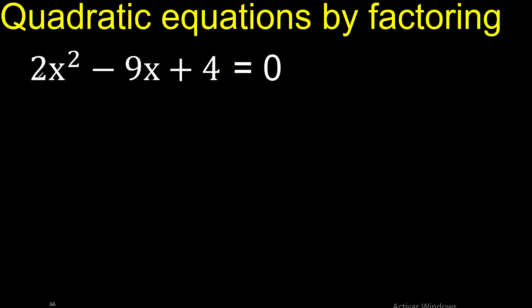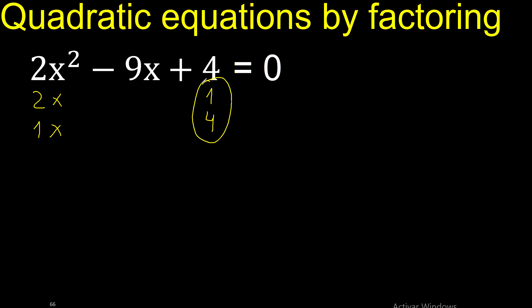2 numbers that multiply: 2 multiplied by 1 is 2, x multiplied by x is x squared. Find 2 numbers that multiply to 4: 2 multiplied by 2 is 4, or 4 multiplied by 1 is 4, or 1 multiplied by 4 is 4.